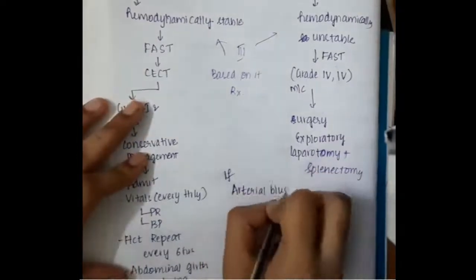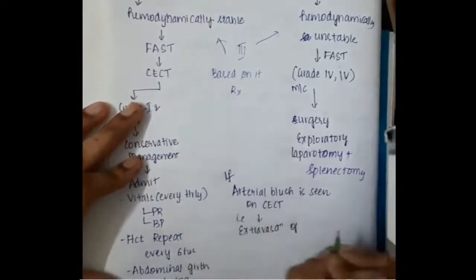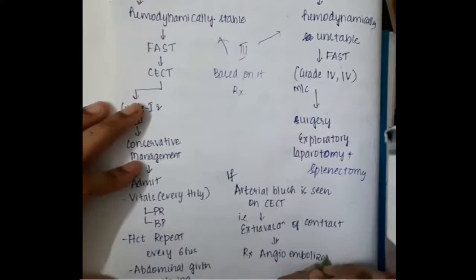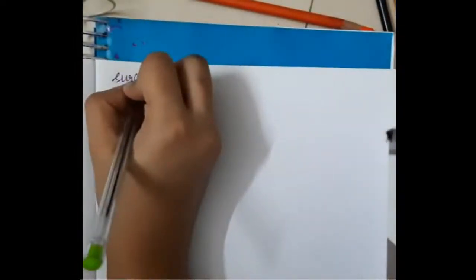On CECT in hemodynamically stable patients, if an arterial blush is seen, it means there is extravasation of contrast, which is seen in grade 4. In such cases, angioembolization should be done. If angioembolization fails, then splenectomy is performed.